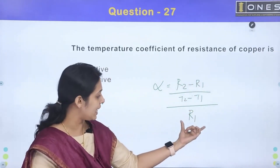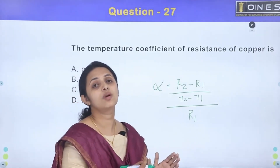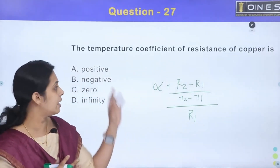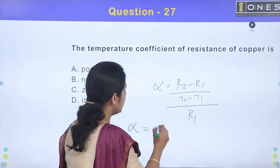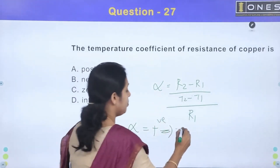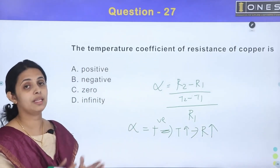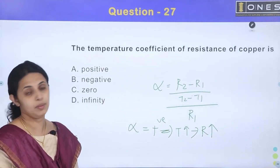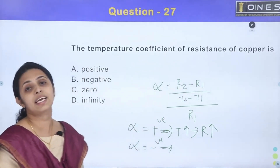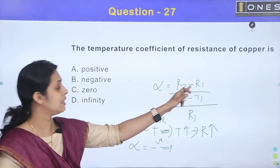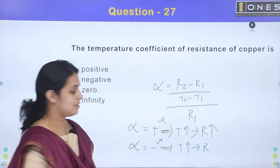When temperature increases, resistance increases beyond the base temperature — this means the temperature coefficient of resistance alpha is positive. Where we have a negative temperature coefficient, there is a difference in terms of the temperature and the material.